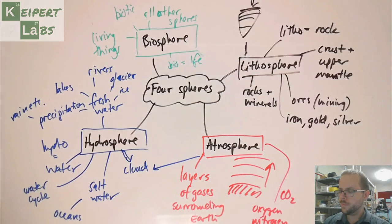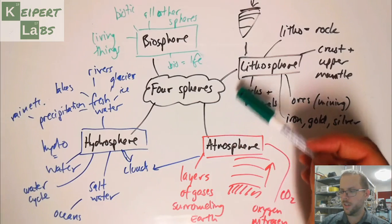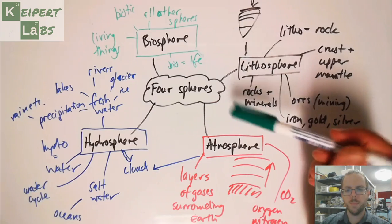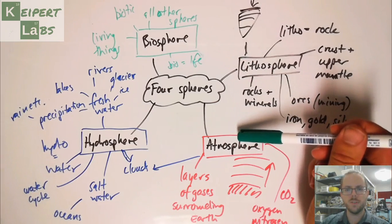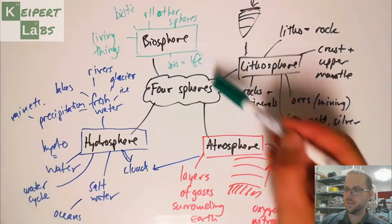For example, if we were to take a volcanic eruption occurs in the lithosphere, we're thinking about rocks underground, but then it spews toxic gases up into the atmosphere. So it might poison the clouds, making acid rain, or it might release toxic gases that kill things. So that kind of affects the biosphere.